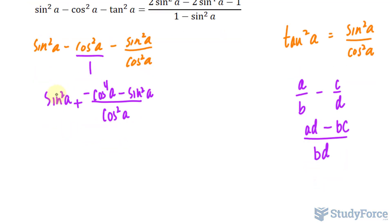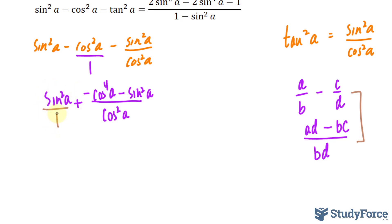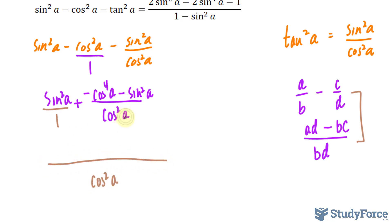The next step is to combine this term with the bigger fraction, using the same logic as before. I'll make sine squared A over 1, and multiply the two denominators together to get cosine squared A. Cosine squared A times sine squared A gives us the following expression.